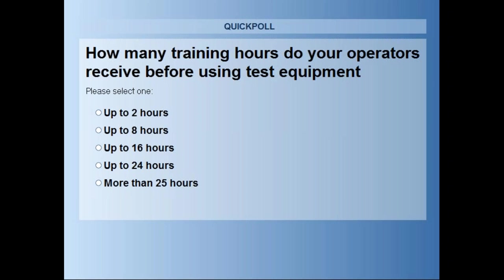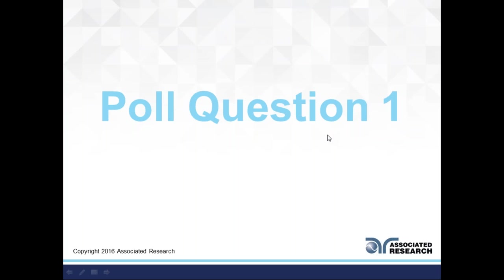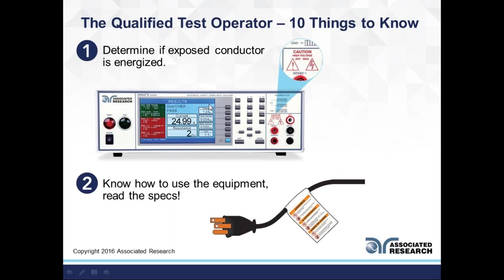Poll results: 33% of people receive up to two hours of training, and 75% of people receive up to eight hours of training. So it sounds like within a day, your new employees or operators or technicians are near a high-pot tester, presumably with a qualified trainer next to them. From my experience working at an NRTL as a lab technician, there were definitely weeks before you were allowed to use the equipment by yourself.